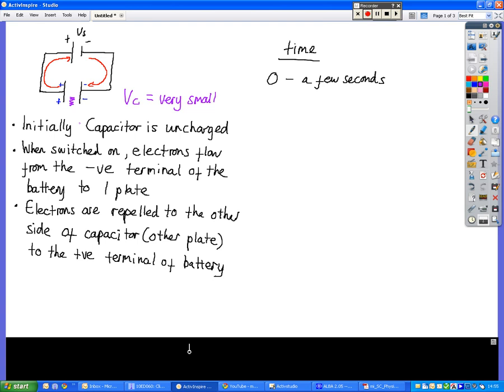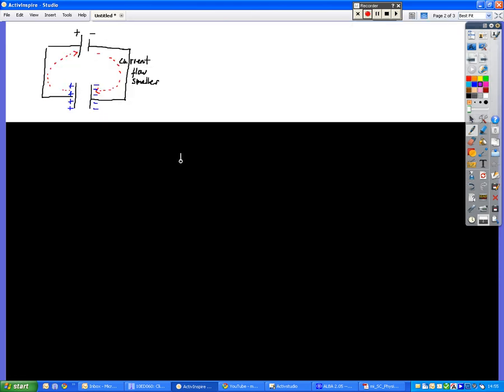If we then move on to a few seconds later, we're looking at there being more charge on this side. The electrons are coming down from the negative terminal and gathering on this plate here. We've still got electrons on this side of the capacitor that are being pushed back around to the battery.